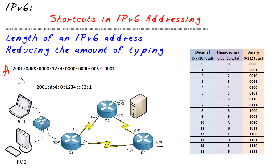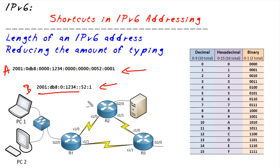Looking at the long form versus the shortened form, which would you prefer to type? Some of you are saying you'd use DNS for everything — and DNS is going to be huge, just like it always has been. But from a raw configuration perspective, using the shortcut method is much more efficient. In fact, even if you put in an IPv6 address the long way, it will still be displayed in the config with the implied shortcuts applied.